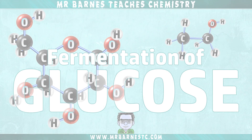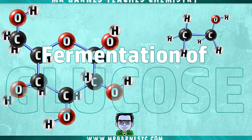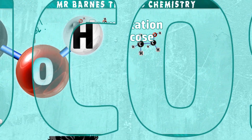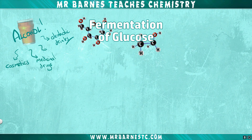Welcome to this video looking at how alcohol is produced during fermentation. Alcohol is used in alcoholic drinks, but it can also be used as a solvent in cosmetics, in medicinal drugs, and as a fuel. The question is how do we make it, and the answer is fermentation.